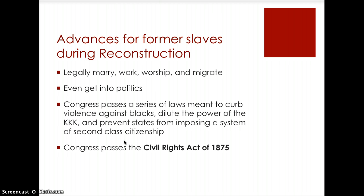Congress passed laws prohibiting the practices of the KKK and other groups bent on terrorism and intimidation. They passed laws saying that former slaves could work at their will, had the right to education, the right to get married, and the right to religious freedoms. We also saw a large migration of former slaves throughout the South and North once they had this mobility and freedom. One important piece of legislation passed during this period was the Civil Rights Act of 1875 — and that date is very important, as there have been about a dozen civil rights acts over the years.